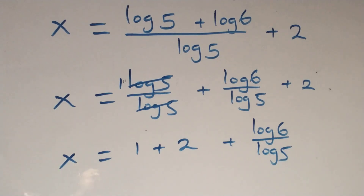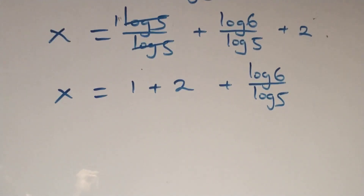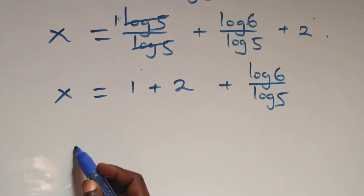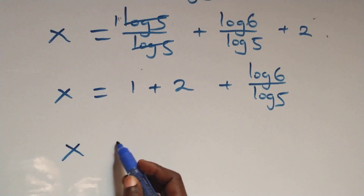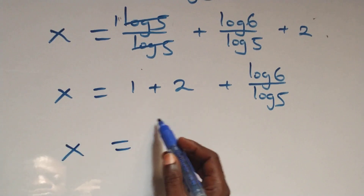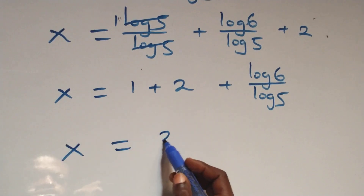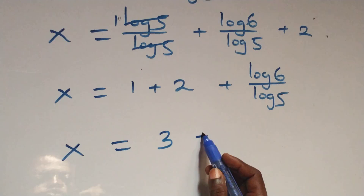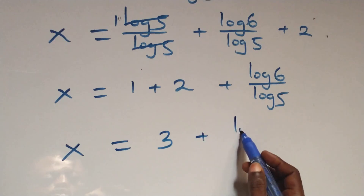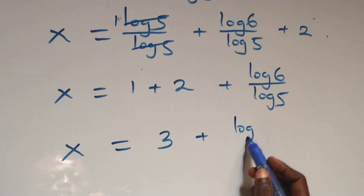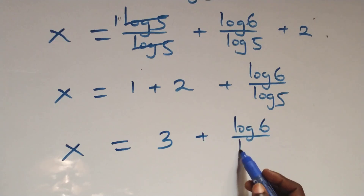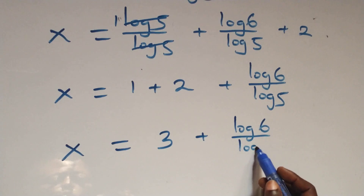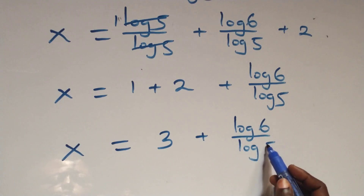That is, this becomes x equals to 1 plus 2 — that's 3 — then plus log 6 over log 5.